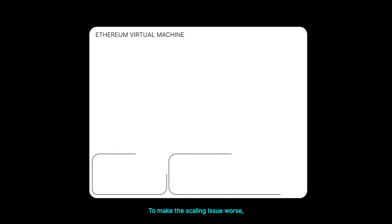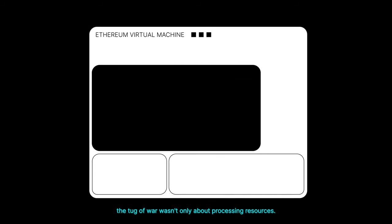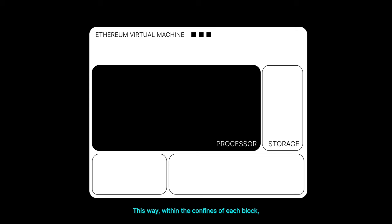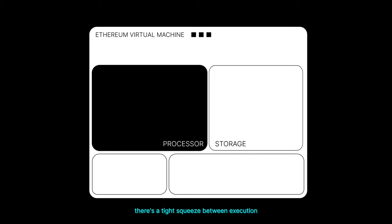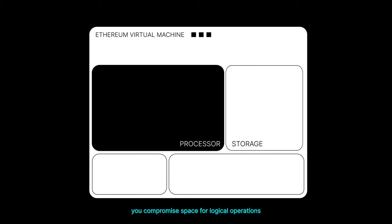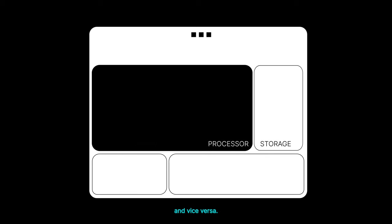To make the scaling issue worse, the tug-of-war wasn't only about processing resources. That's because, as a global computer, Ethereum should not only have a CPU but also work as a decentralized memory and storage system. Within the confines of each block, there's a tight squeeze between execution and data storage demands. If you ramp up the data, you compromise space for logical operations and vice versa.